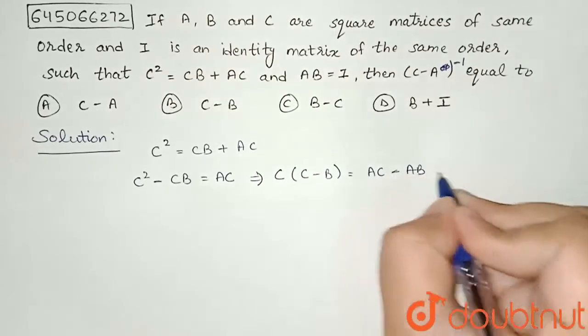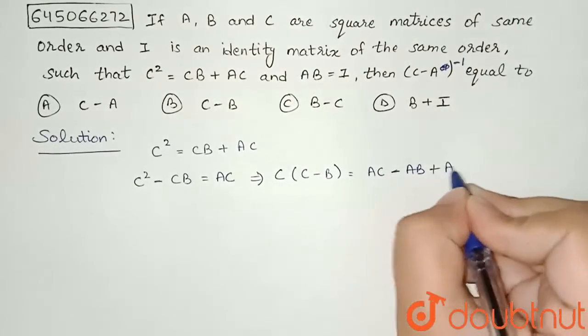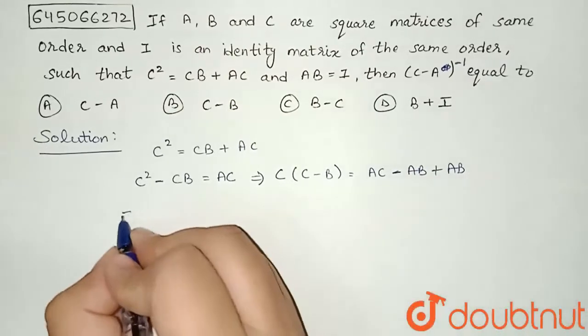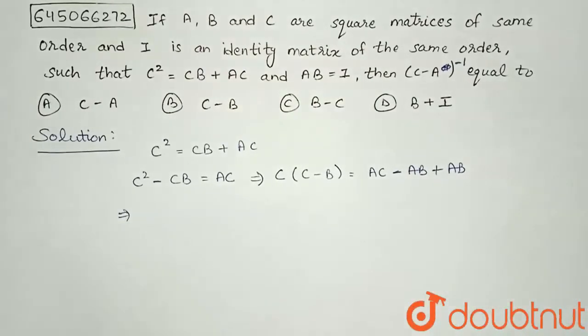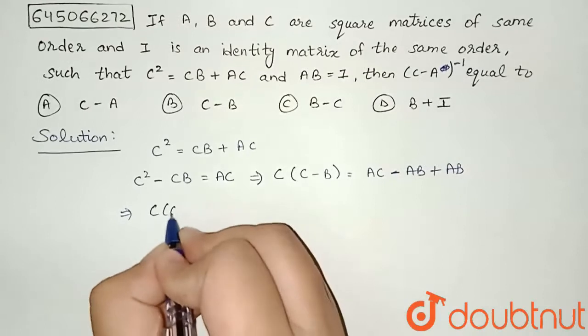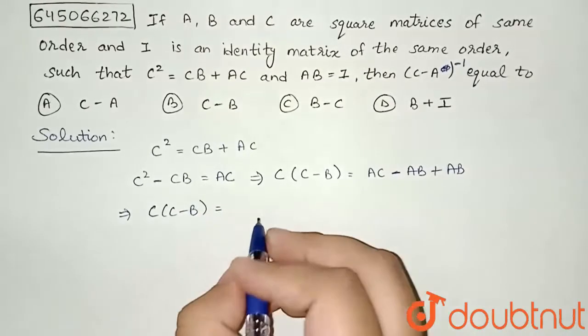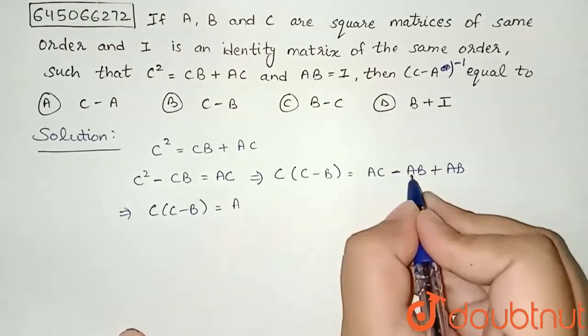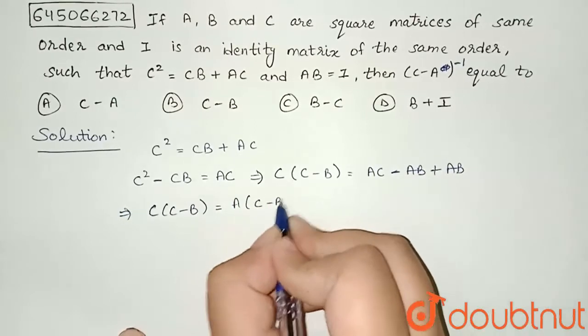I will add and subtract AB on this side. So what I will get now: C(C - B) equals, I will take A common from these two terms, so A(C - B) + AB.